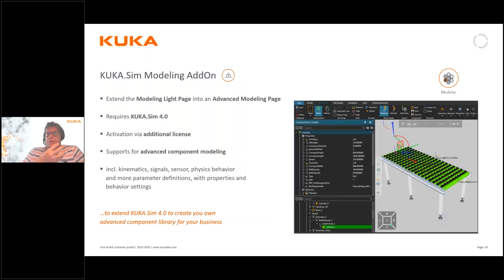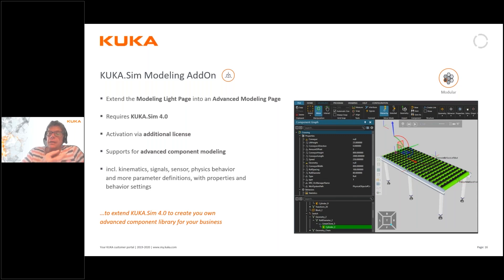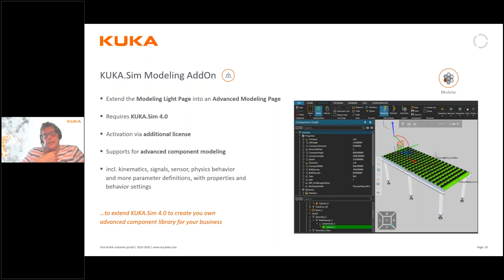There is also a modeling add-on. We can do simple modeling in KUKA.Sim without this add-on — for example, making a simple robot tool or breaking a solid STEP file into its individual components. But if I want to create my own library of objects with their own dedicated property tab pages, predefined behaviors, kinematics, signals, and sensors, and save those as predefined objects, then I would need the modeling add-on. Most users won't need the modeling add-on, but some certainly will.